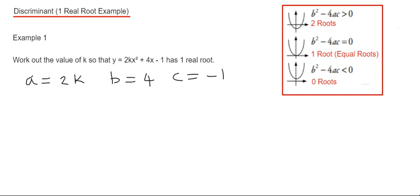If we substitute these into b squared minus 4ac equals 0, we get 4 squared minus 4 times by a times by c, and it's equal to zero because we're told there's one real root. So 4 squared is 16, and minus 4 times 2k is minus 8k times by minus 1, which makes it plus 8k.